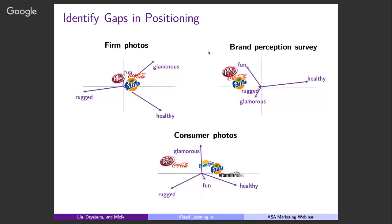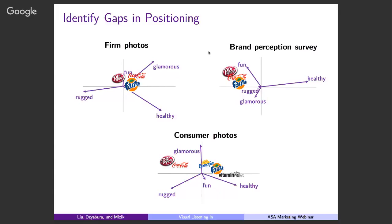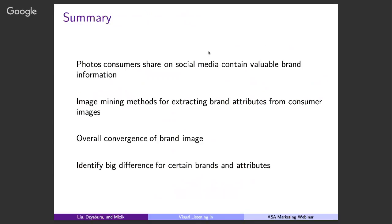To summarize: photos consumers share on social media contain valuable brand information. We proposed these image mining methods — a two-stage method — to extract brand attributes from consumer photos. Overall, we found convergence of brand image across metrics, but by comparison we can also identify some differences with certain brand attributes, where firms can start to change their positioning or targeting strategies. That's pretty much the full work. But I'm also doing something new that aligns with this work: if each consumer can also be represented by a bunch of photos on their Instagram, we can do image-based targeting — measuring personality traits from the photos you post, and then targeting brands that match your personality.